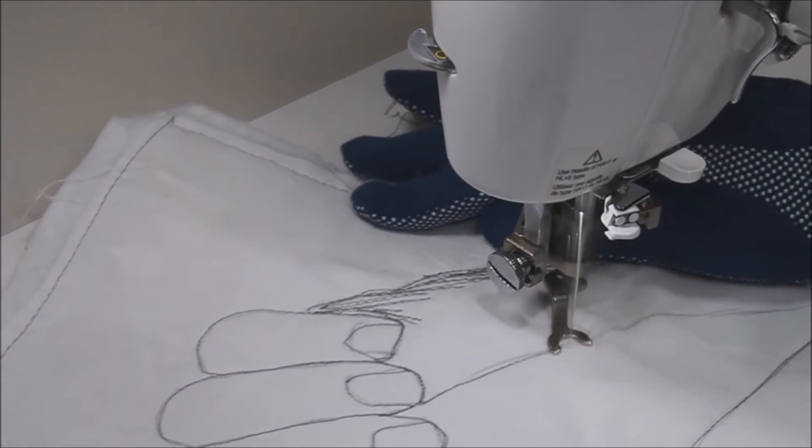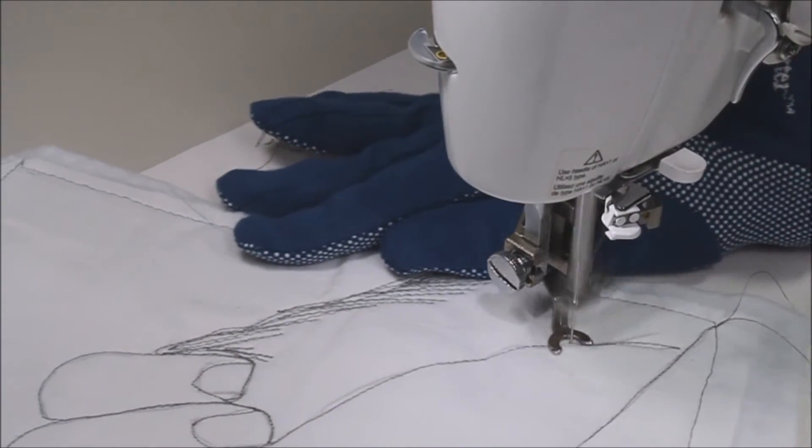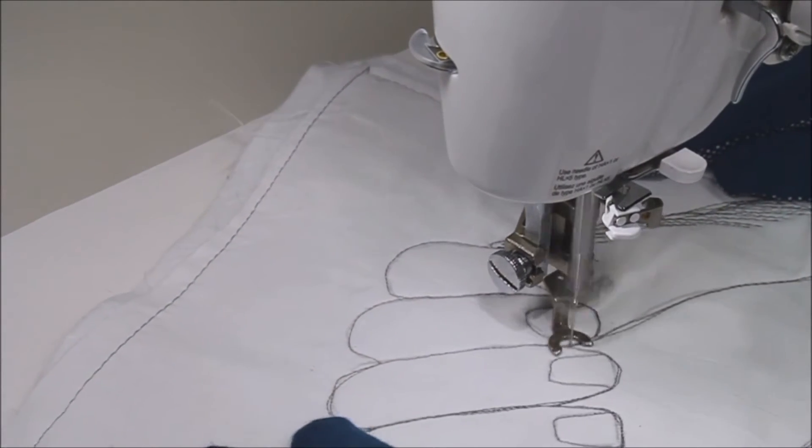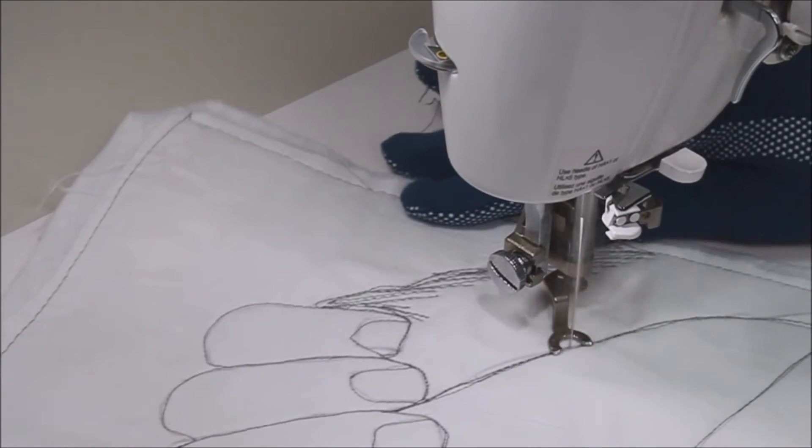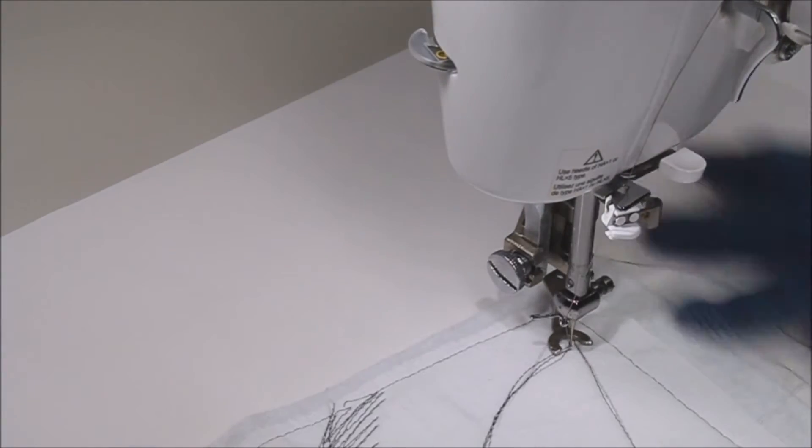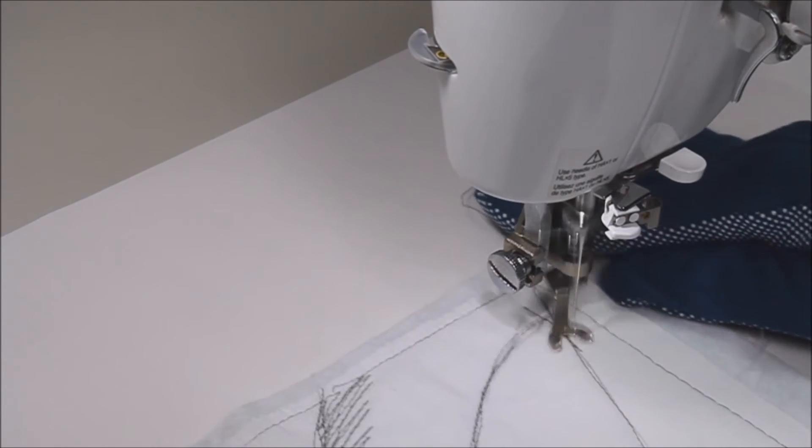You can always go over your stitch lines as many times as you want to emphasize the lines. I'm stitching over the line in the palm of the hand to give it some more detail, and then I move on to some more shading on the other side.